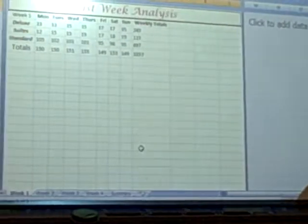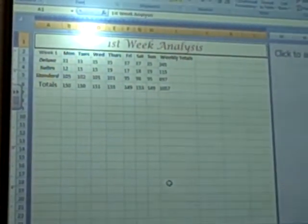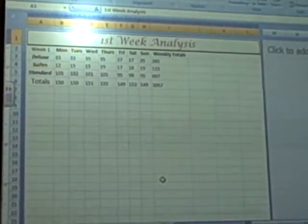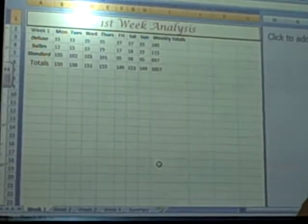We have three kinds of rooms: EOS, Suites, and Standard. And this is the total rooms we sold in the first week.